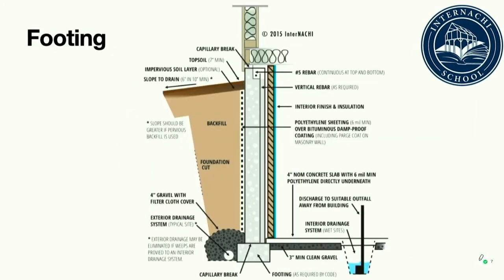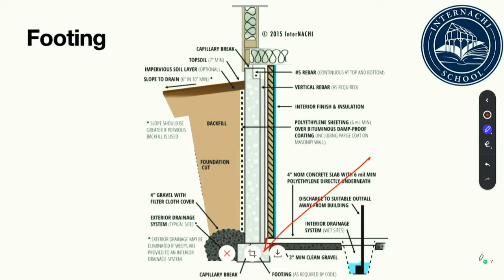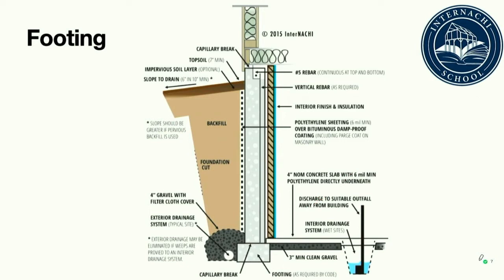Typically seen at the bottom of the foundation or stem walls, the footing is generally made of poured, reinforced concrete. Often wider than the foundation wall, the footing bears the full weight of a dwelling. In some instances, when the soil is not completely compacted or is wet, a spread footing is designed and installed.